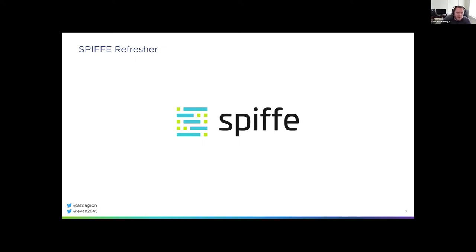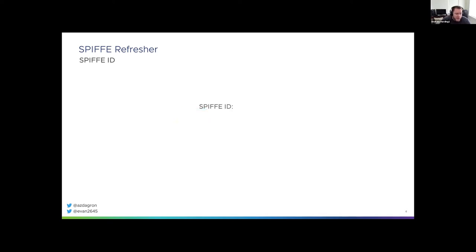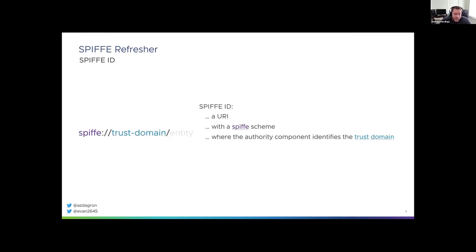Kelsey talked about some of these topics, so hopefully this will be a very light refresher. We're going to start off with the SPIFFE ID. This is the heart of SPIFFE and forms the way that we structure identity for services. It's a URI. It has a couple of components: the authority component represents the trust domain for the identity, and the path component represents the particular entity identity within that trust domain.